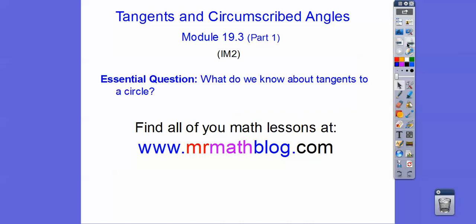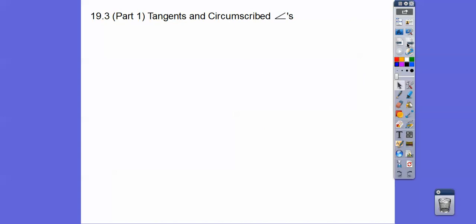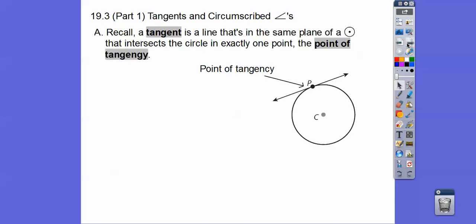So our question here is, what do we know about tangents to a circle? Okay, so tangents and circumscribed angles of a circle. So recall a tangent is a line that's in the same plane of a circle and intersects that circle in exactly one point, and that point is called the point of tangency.